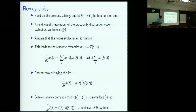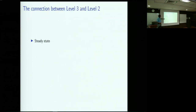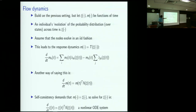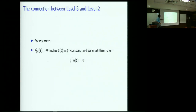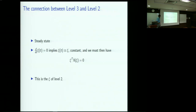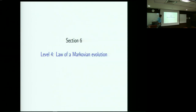What's the connection between level 3 and level 2? Level 2 is a steady-state version of level 3. Setting d xi/dt equal to 0 gives xi^T Lambda(xi) = 0, which is exactly the condition for level 2. So d xi/dt = 0 implies xi(t) is a constant, and that's exactly the level 2 fixed point equation.